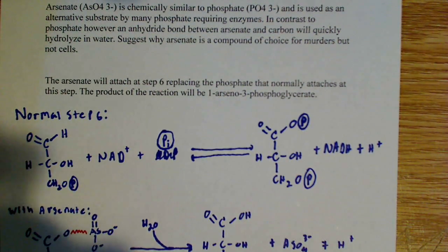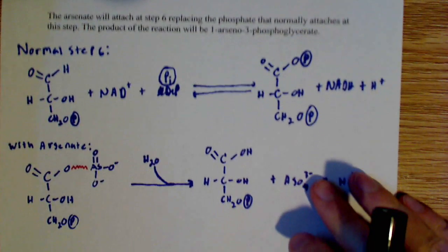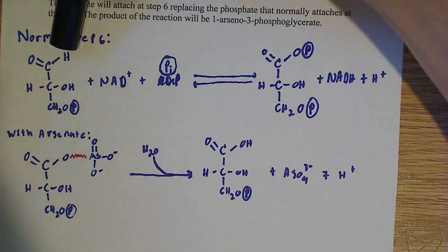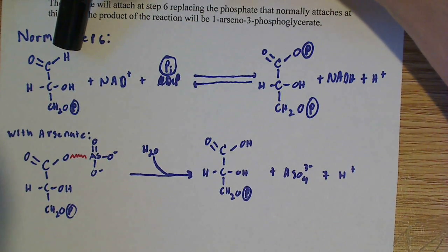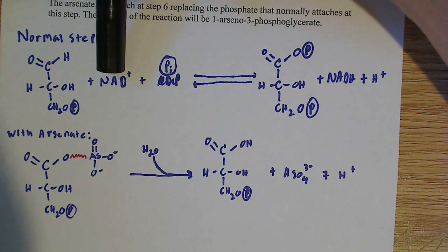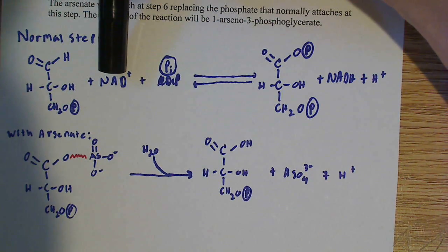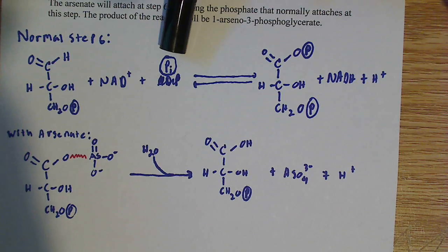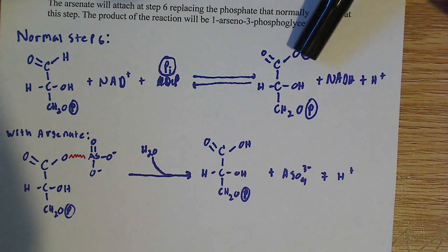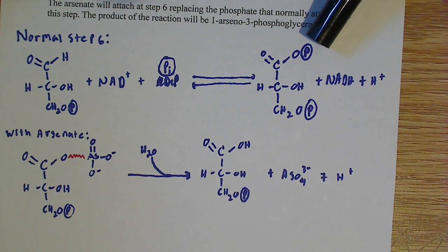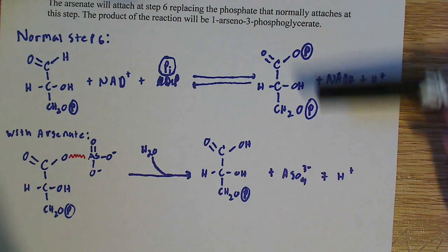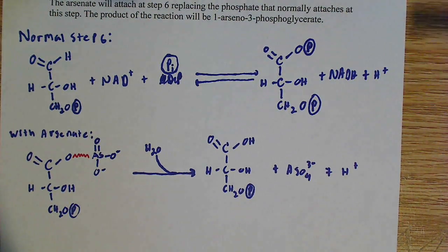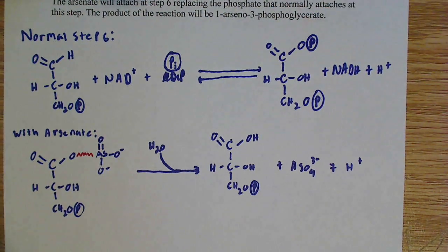Normally, the normal step six - I drew them out here. This is glyceraldehyde-3-phosphate, and remember this is the step that reduces NAD+ to NADH. We're normally adding this phosphate group, and what we wind up with is 1,3-bisphosphoglycerate, because there's a phosphate group here and a phosphate here. This is what we're normally dealing with in step six, along with NADH and H+.